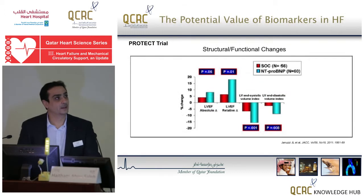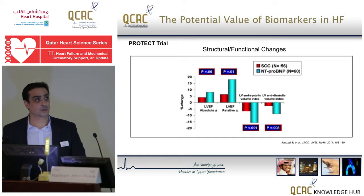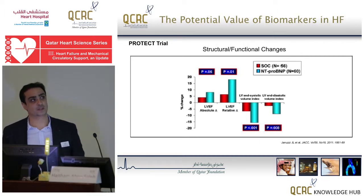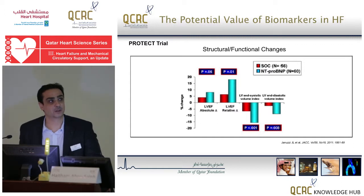Clinically, the echocardiogram showed that the structural and functional changes in these two categories of patients were quite different. The left ventricle ejection fraction in the NT-proBNP guided patients was significantly higher than in the standard of care group, and the left ventricular systolic and diastolic volume indices were also significantly ameliorated and improved in the category of patients enrolled in the NT-proBNP strategy.